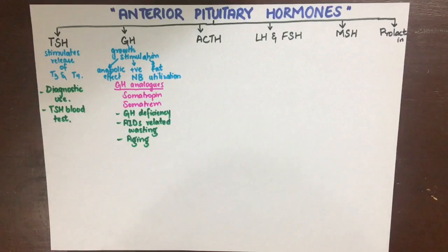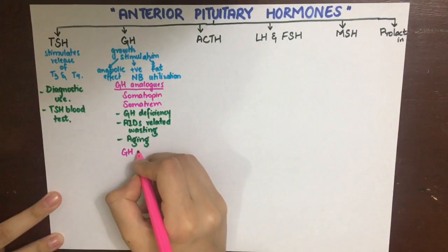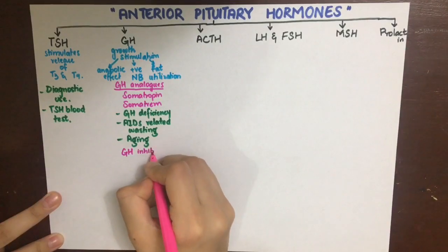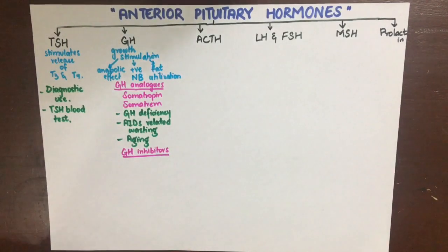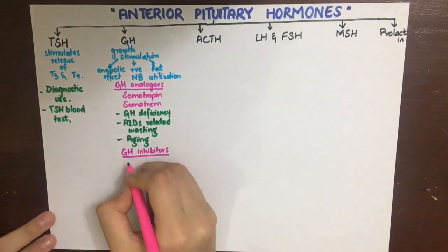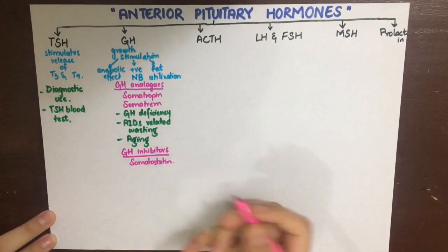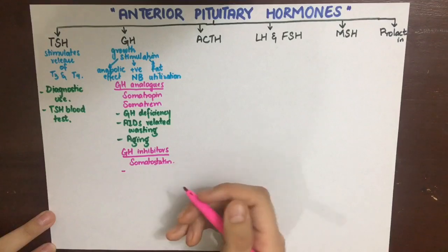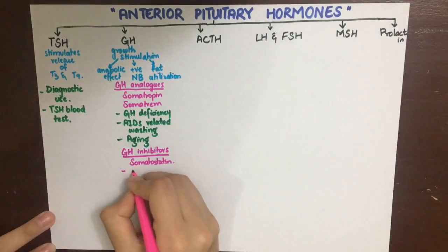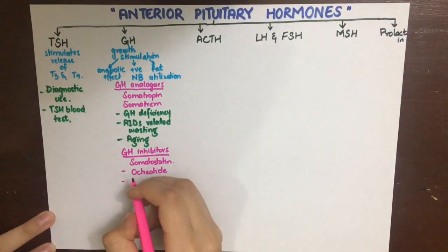We have growth hormone inhibitors. In the body, we have a hormone called somatostatin which does that. It also inhibits other hormones such as serotonin, gastrin, insulin, and glucagon. It also has an effect on the constriction of hepatic, splanchnic, and renal blood vessels.